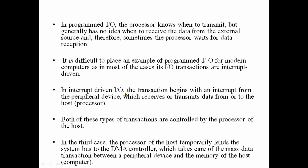In interrupt-driven I/O, the transaction begins with an interrupt from the peripheral device. The peripheral device issues an interrupt, and there is an interrupt to receive the transaction and transfer data to or from the host processor. This random method is controlled by the processor — it can be programmed I/O or interrupt-driven. For DMA, the system provides a temporary processor handover using the system bus — address, data bus, and control bus — and the DMA controller takes over from the peripheral device.